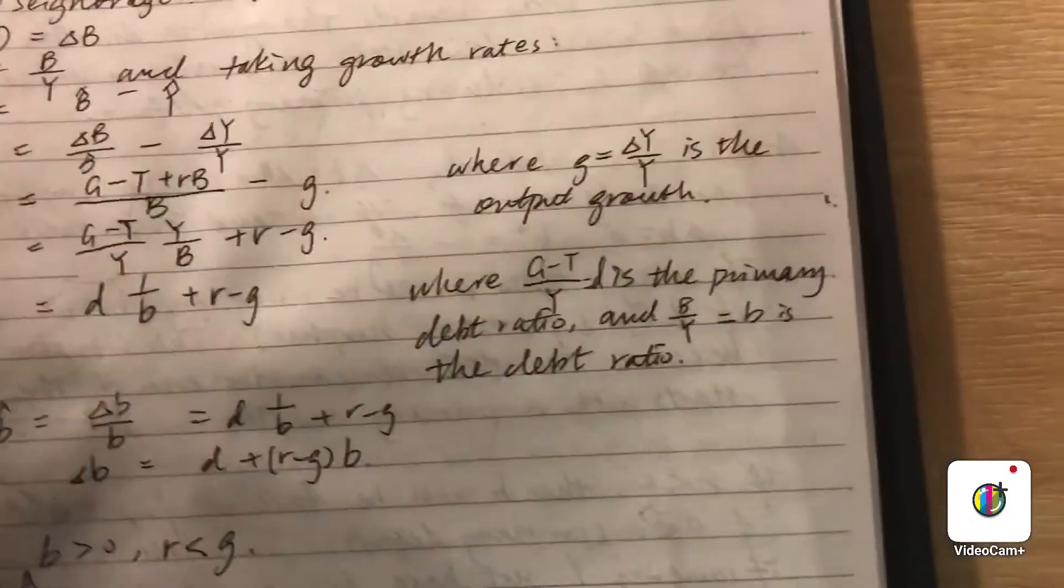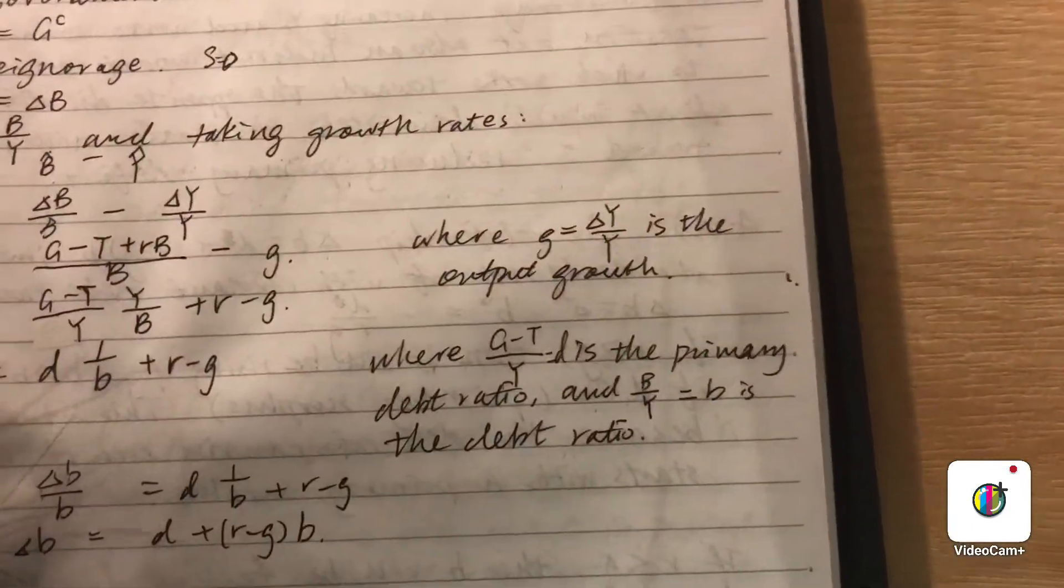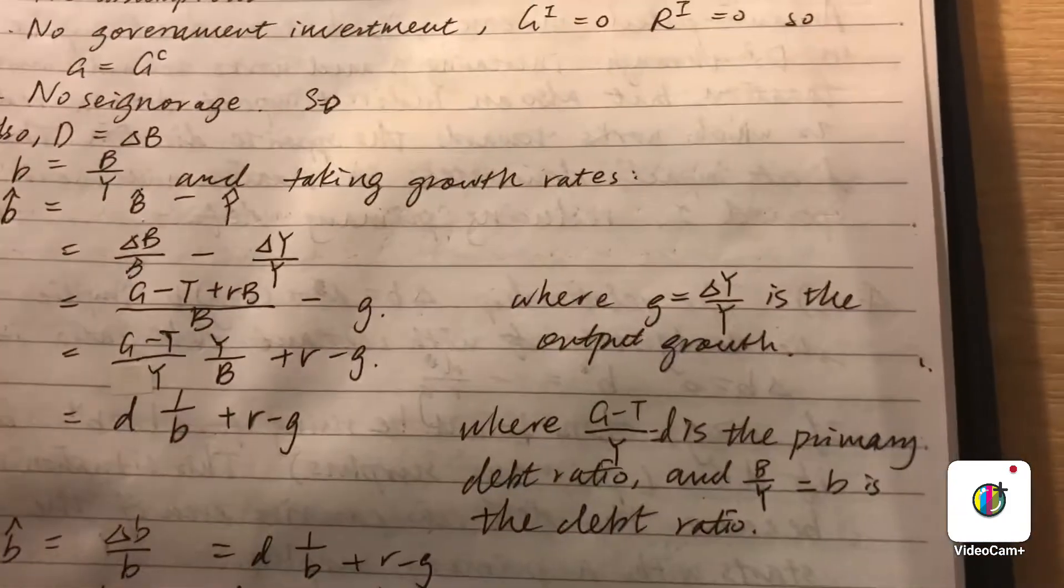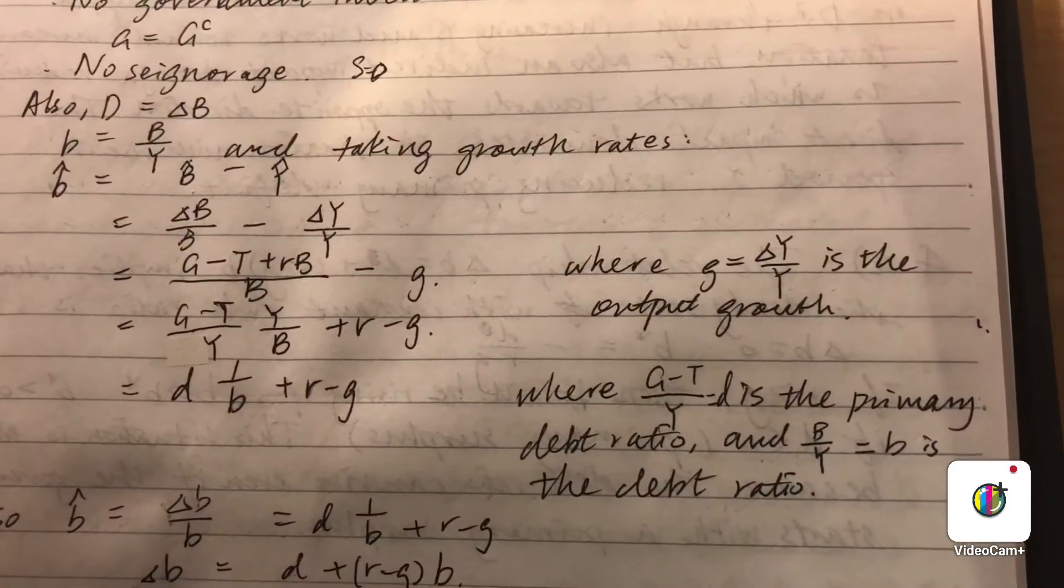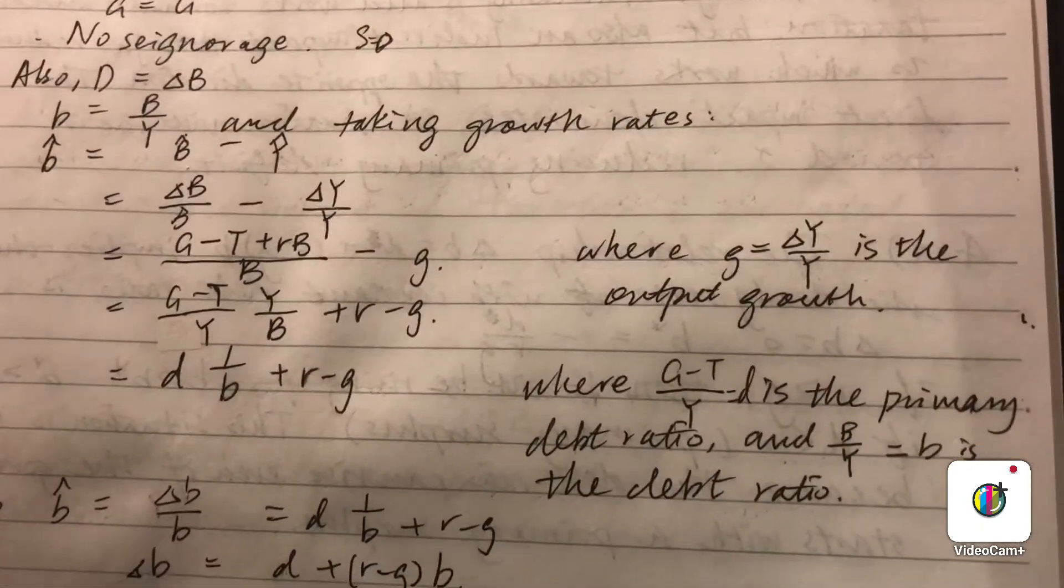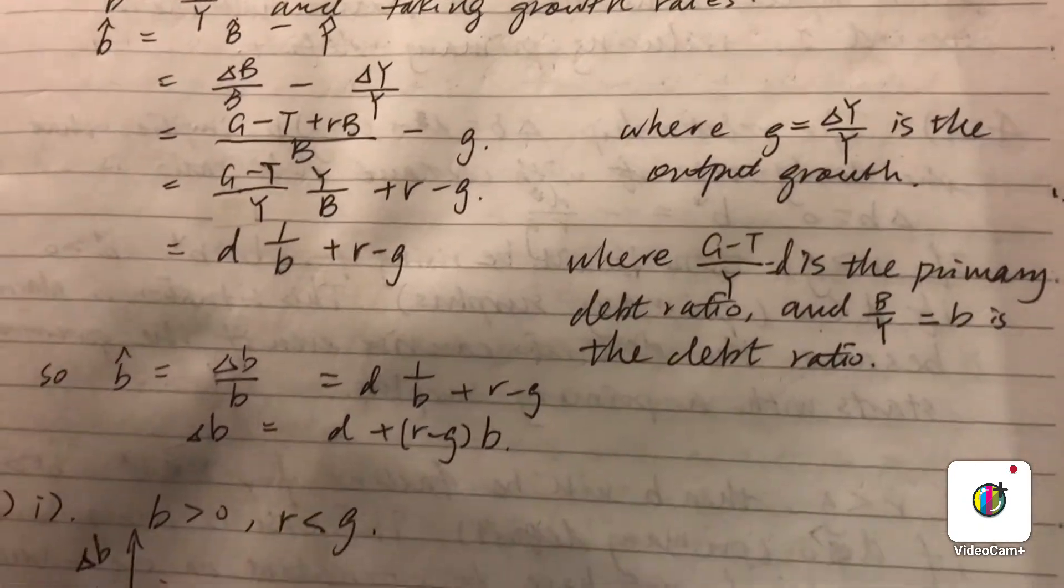Now we define b small b as big B over y, and we take growth rates of this equation, so we get this.